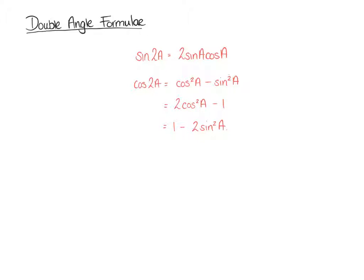And from those compound angles we can move on to the double angle formula. They're on the screen already. You've got sine 2A equals 2 sine A cos A, and you've got cos 2A equals cos squared A minus sine squared A. Cos 2A also has two other variants: 2 cos squared A minus 1, or 1 minus 2 sine squared A.